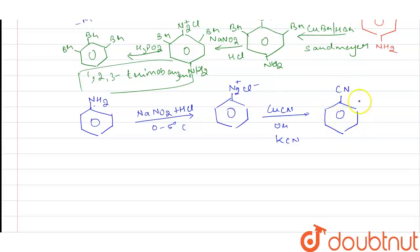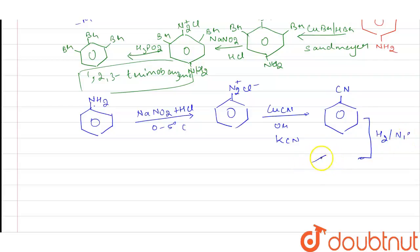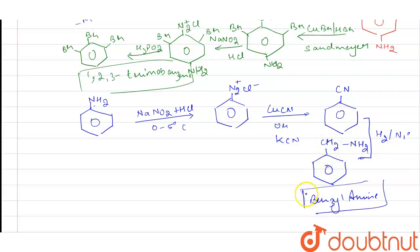We then react it with CuCN or KCN to introduce a CN group at that position. This is followed by reduction in presence of H₂/Ni, where the CN group is reduced to CH₂NH₂. Thus benzylamine is formed as the final product.